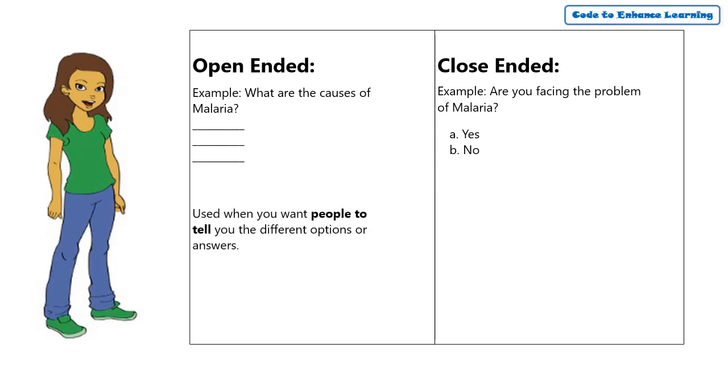Open-ended questions are mostly used where you want people to tell the different options or answers. Close-ended questions are used when you want people to choose among the given options.